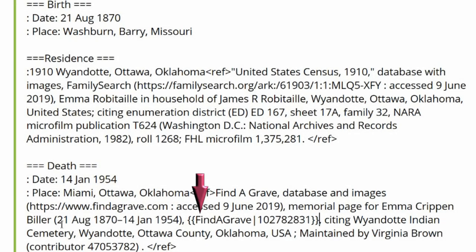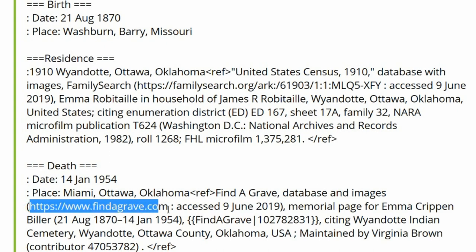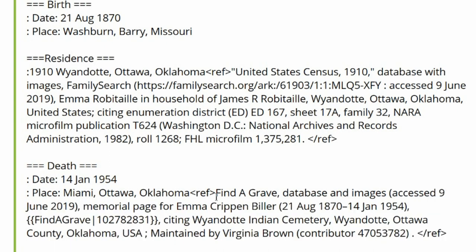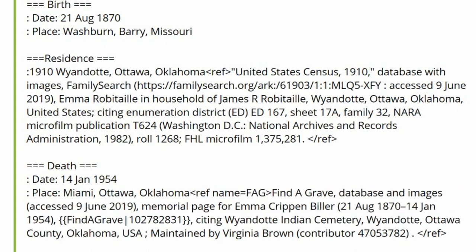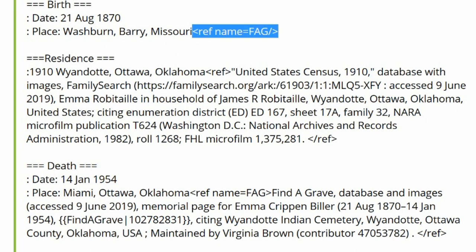Add the WikiTree Find a Grave template and delete the first URL. Name the citation Ref name equal F-A-G. Copy that tag and paste it next to Birth. Place a forward slash at the end of the tag. Copy that tag and paste it next to Burial.